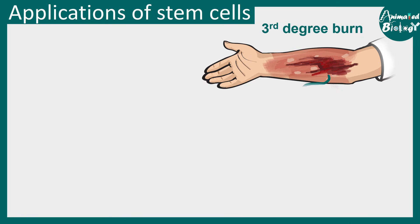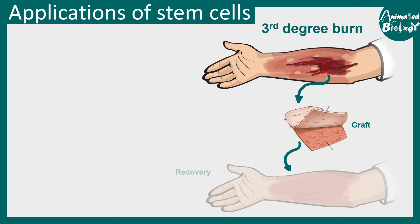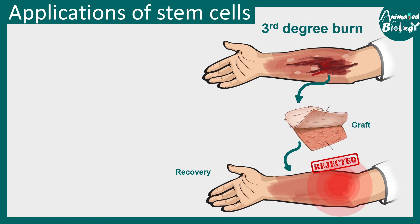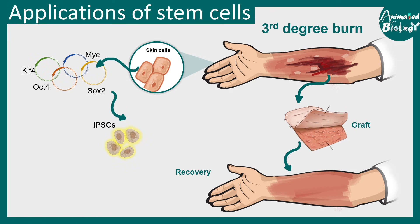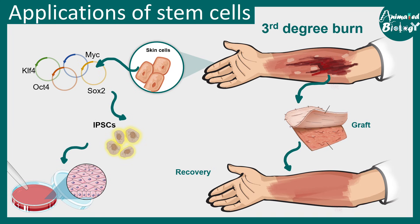Another application involves third-degree burn patients requiring skin grafts. In many cases, grafts are rejected, but iPSC technology can circumvent this: a patient's own skin cells are taken, converted into iPSCs, and then differentiated into a monolayer of skin cells. Artificial skin is grown in the lab and grafted onto the patient, ensuring the graft is not rejected because it comes from the patient's own cells.